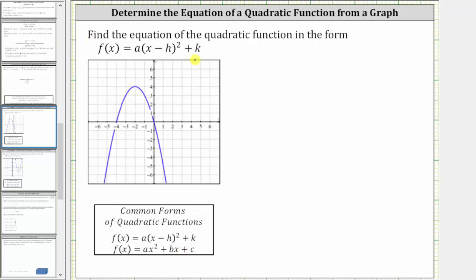For this form of a quadratic function, h comma k is the vertex. So looking at the graph, notice how the vertex, because the parabola opens down, is the highest point on the graph.